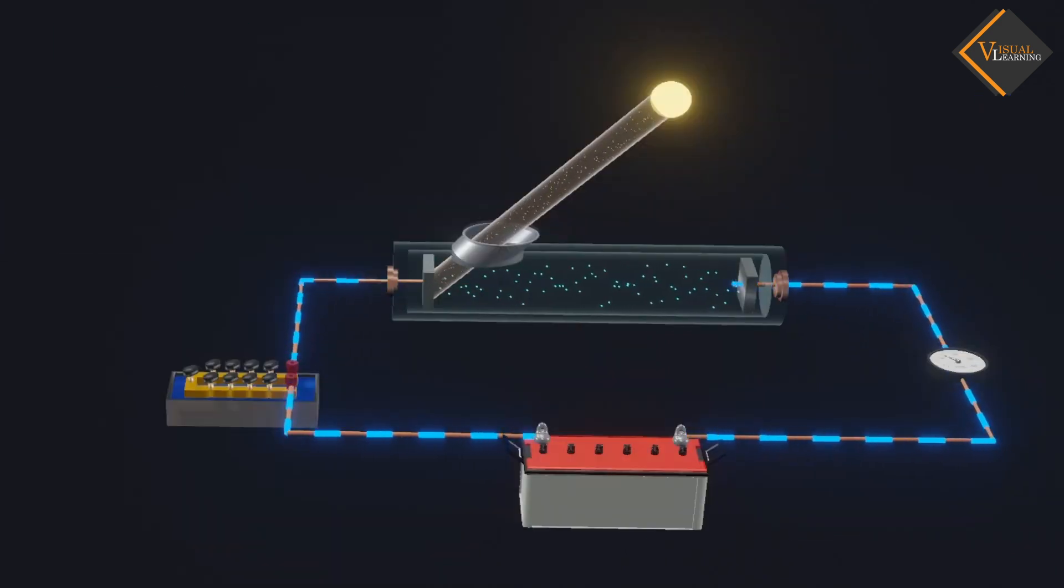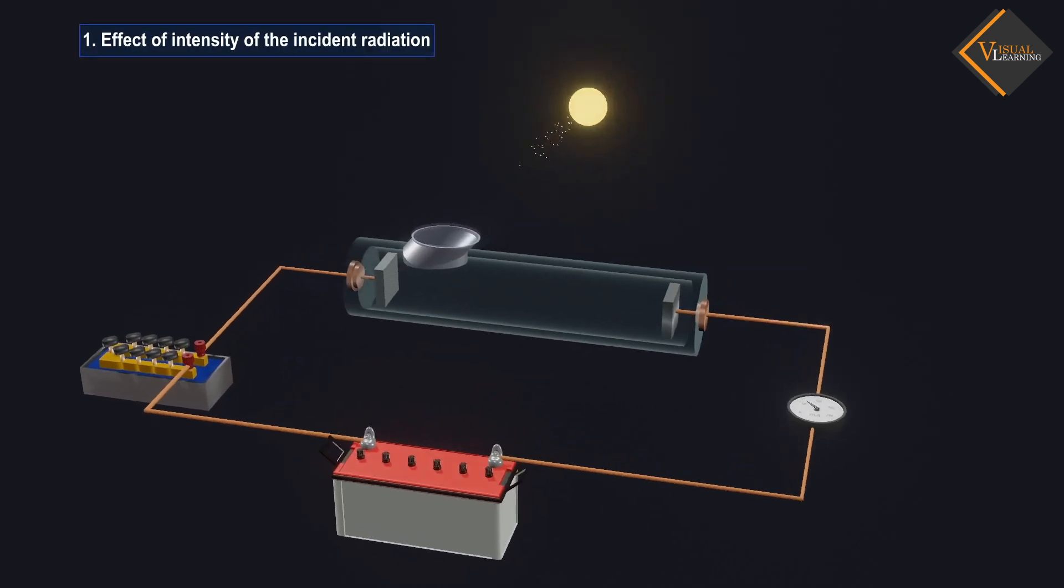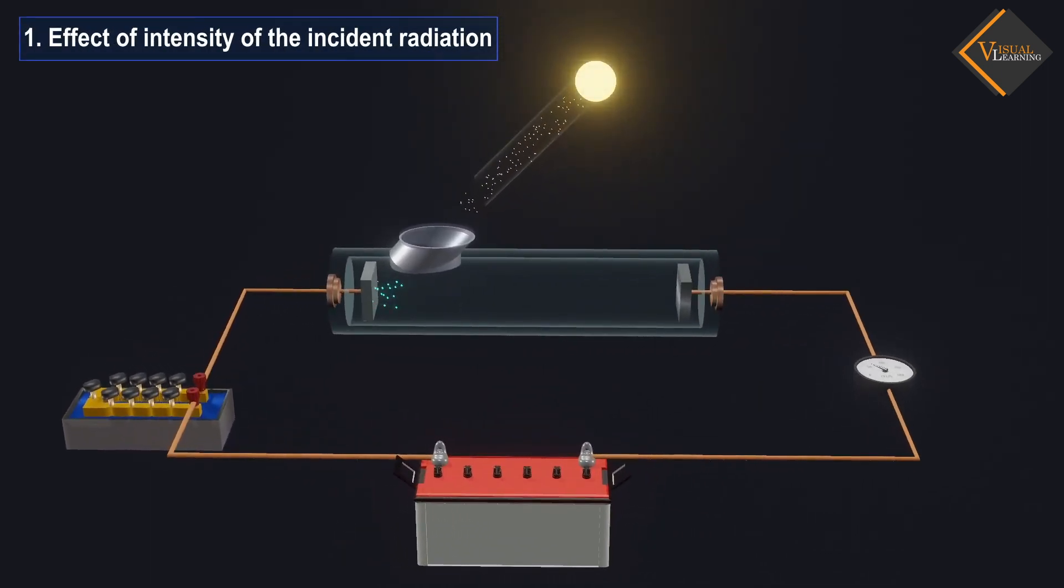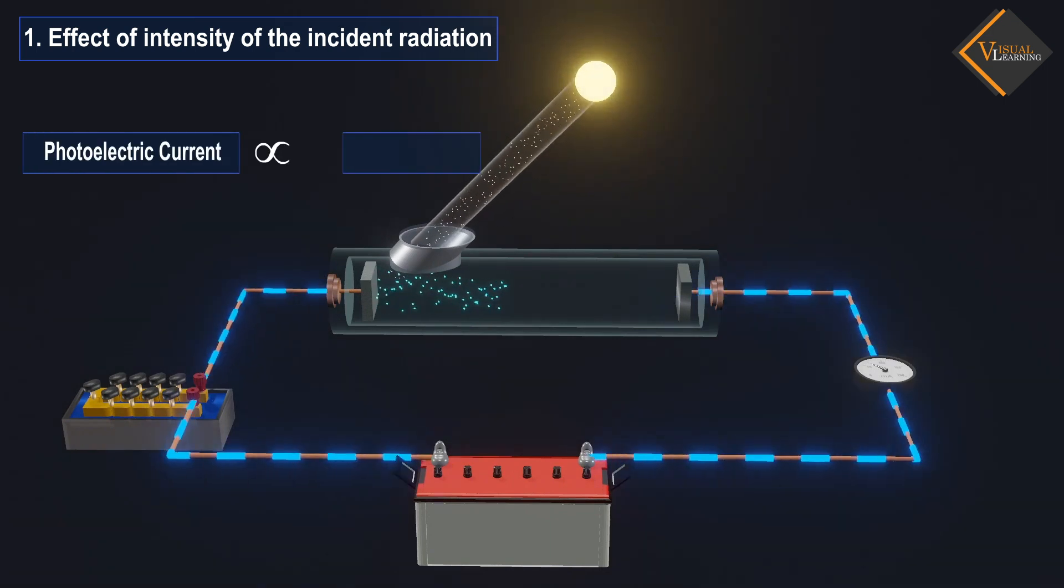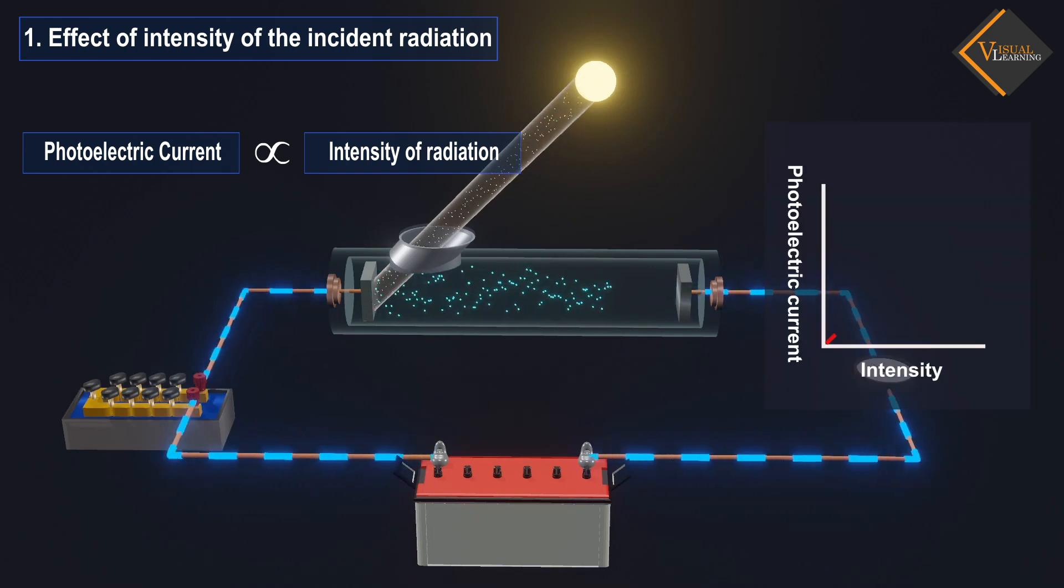Let's now understand how these factors affect the photoelectric effect. Effect of intensity of the incident radiation: it was found in this experiment that the photoelectric current is directly proportional to the intensity of radiation. This means that the higher the intensity of radiation, the higher the generated photoelectric current.